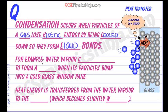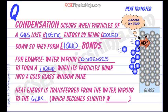For example, water vapour condenses to form a liquid when its particles bump into a cold glass window pane. Heat energy is transferred from the water vapour to the glass, or the window, which becomes slightly warmer.